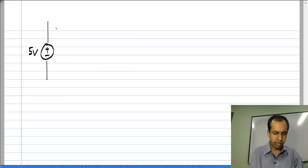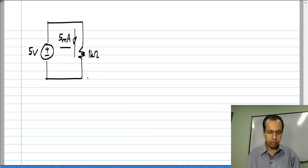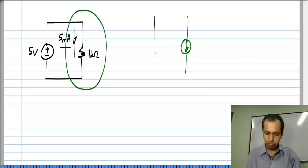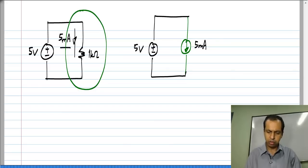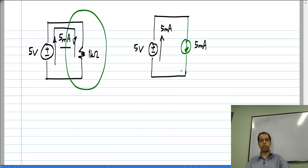Let me take an extremely simple example: say I have 5 volts and 1 kilo-ohm; then clearly 5 milliamps flows through this resistor. Now let me substitute this resistor — according to the theorem I just stated, I have to substitute it with a 5 milliamp current source. The current originally flowing through the 5 volt source is 5 milliamps upwards, and in this case also it is 5 milliamps upwards in the voltage source. So the circuit conditions have remained exactly the same.